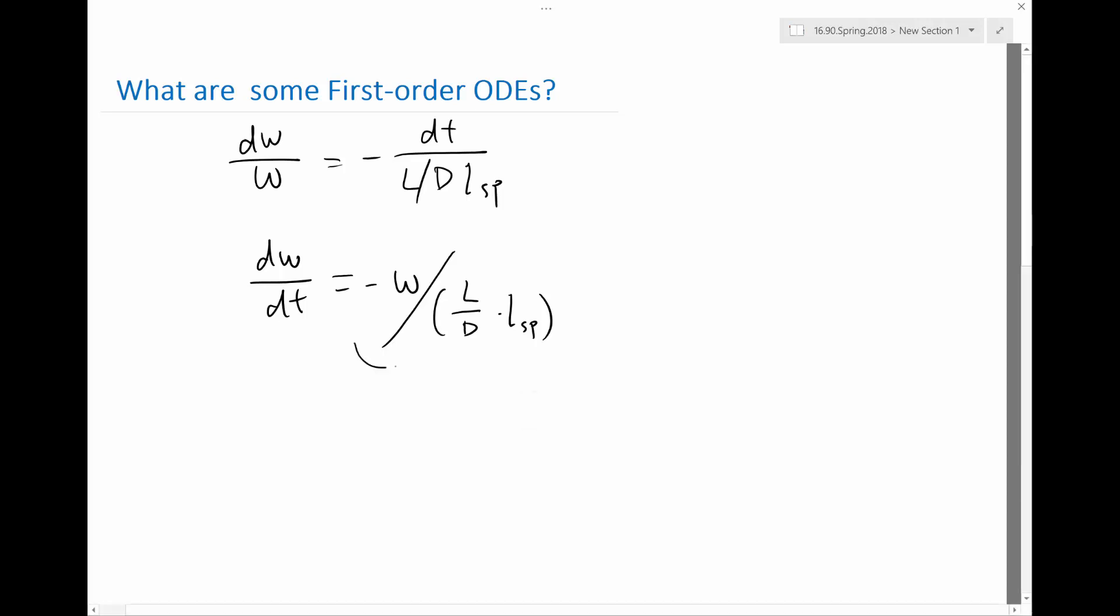So this whole right-hand side, I can call it as F of W. Your F basically is a known function. You can evaluate using your computer anytime for any value of W. It can also be a function of W and the most general W and T, right?